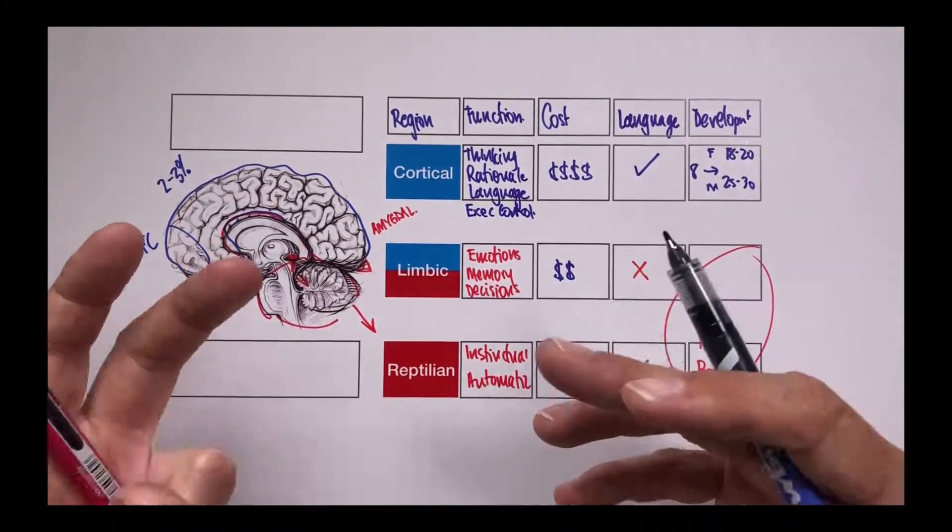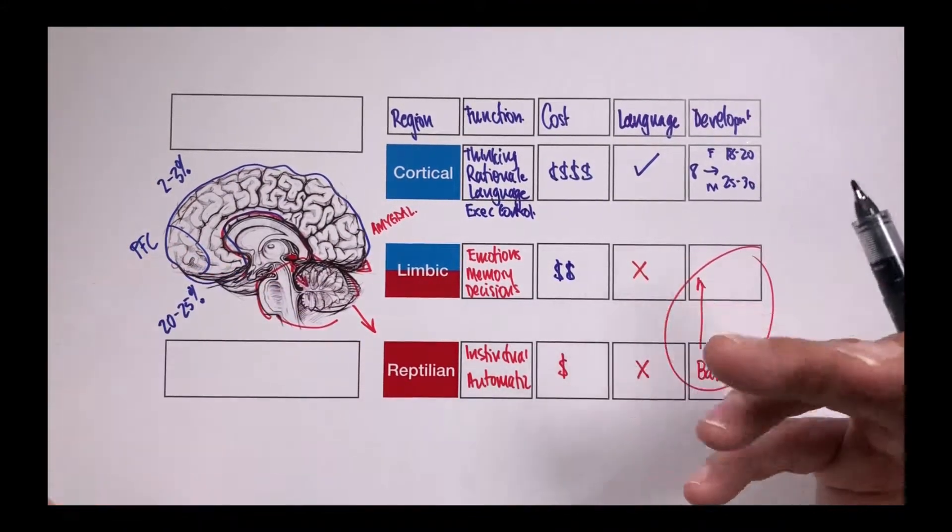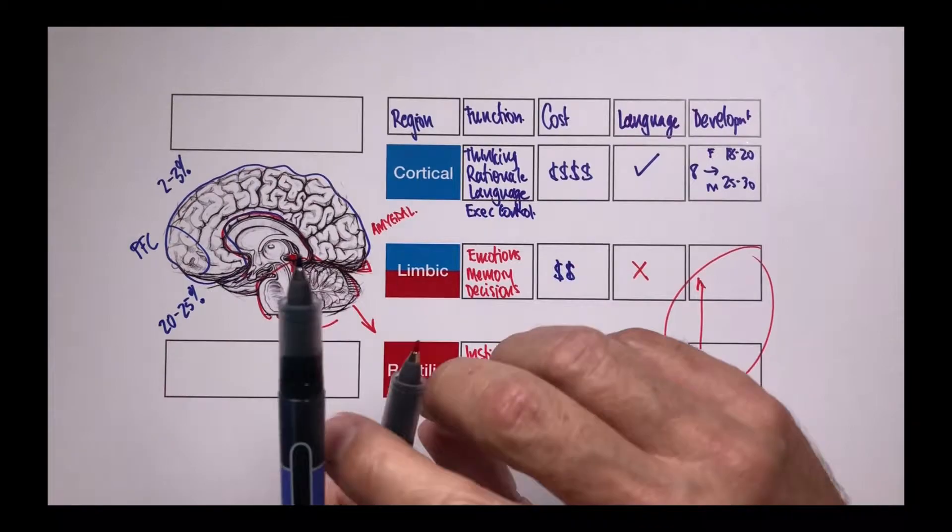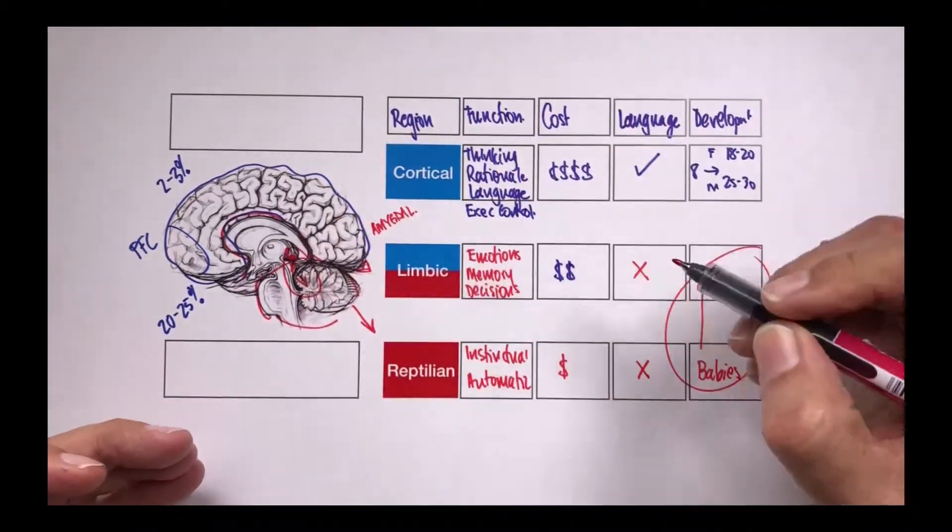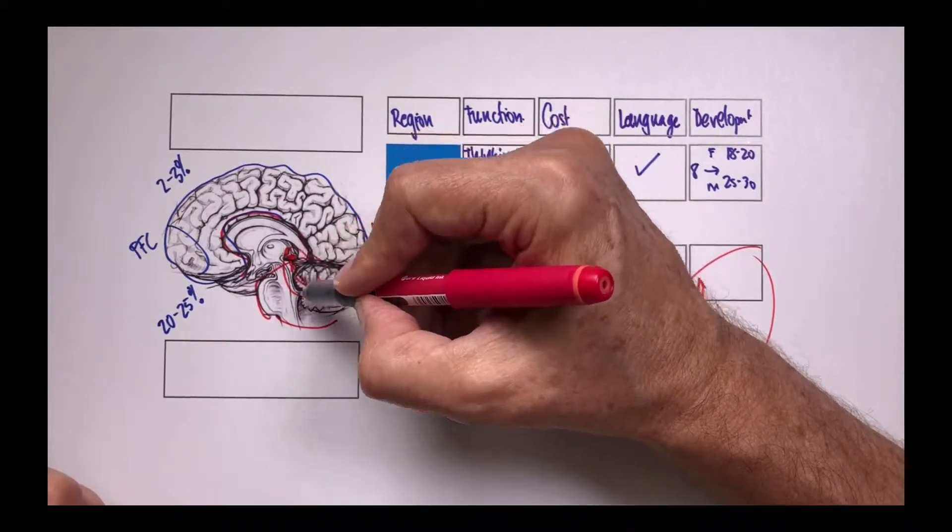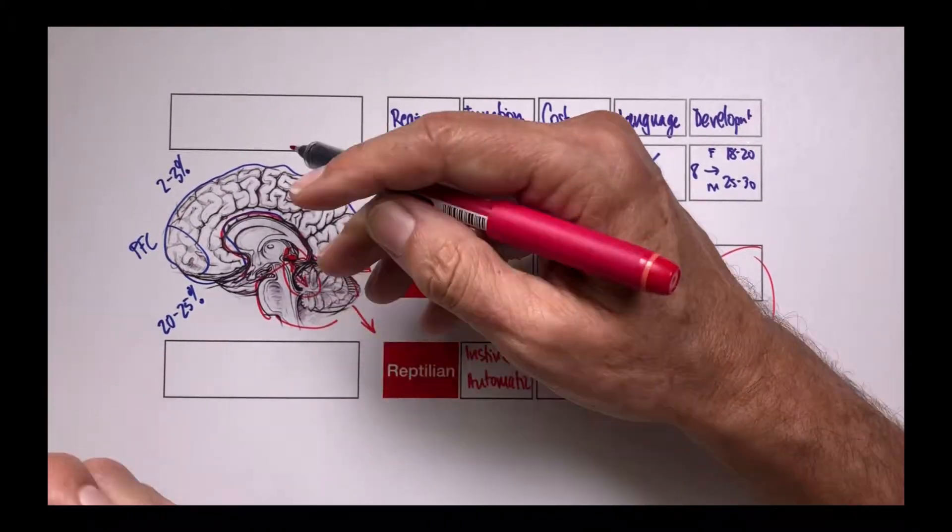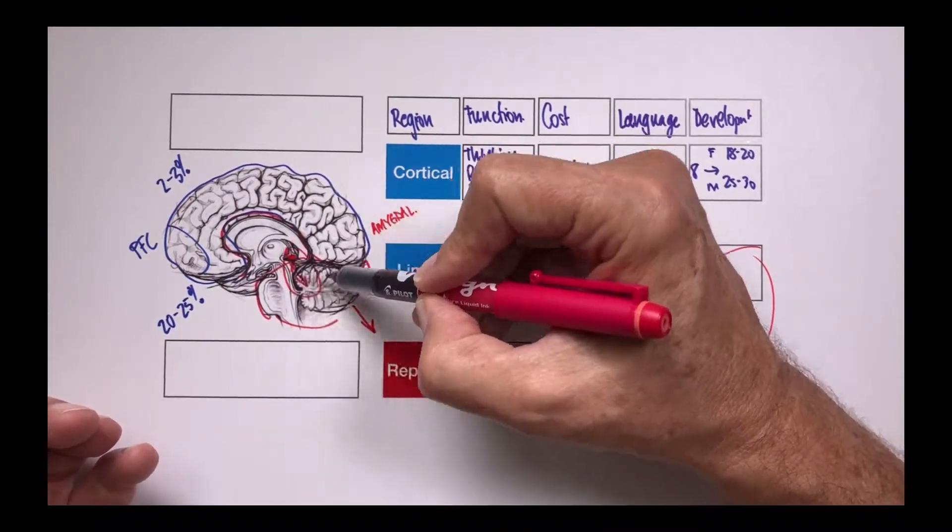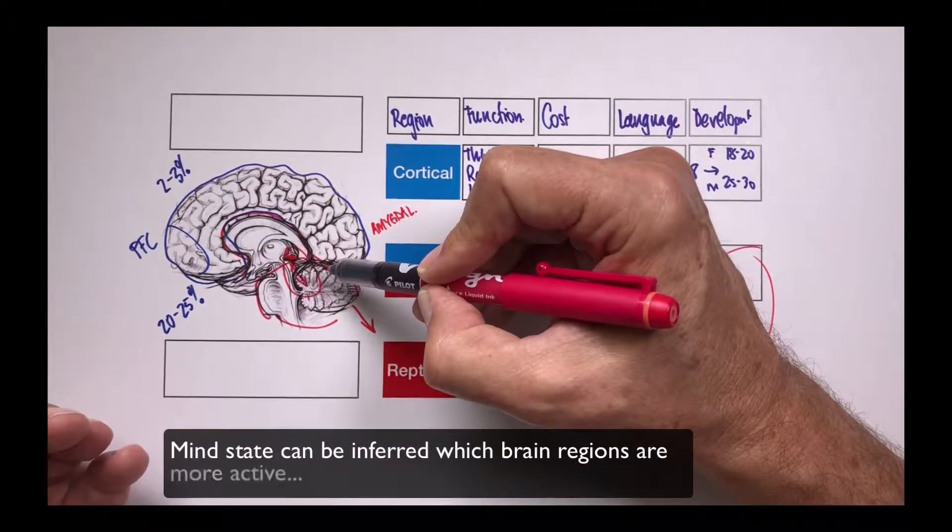But we tend to send more resources to places that are being used more. So if I'm in a fearful state and I'm engaged in this part of the brain, then blood flow will be dominating to this part of the brain and my external behaviors will be determined by where the blood flow is going in the brain.